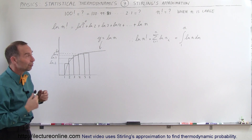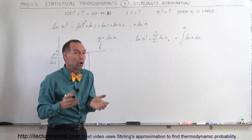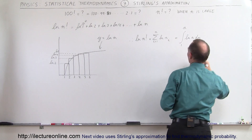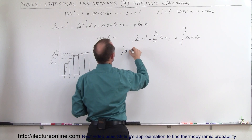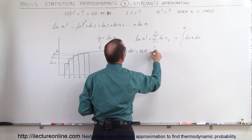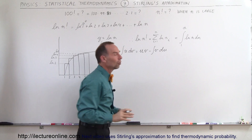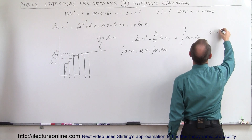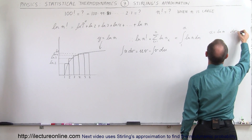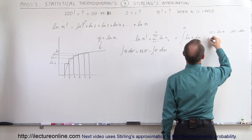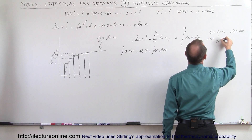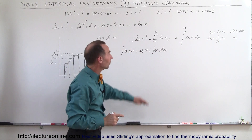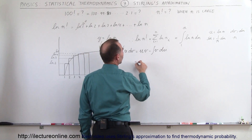So let's go ahead and find the integral of the natural log of n evaluated from 1 to n, and see what that comes out to be — and that is what we call Stirling's approximation. To integrate this, we need to use integration by parts, which means the integral of u dv is equal to u times v minus the integral of v du. So here we have to establish what is u and what is dv.